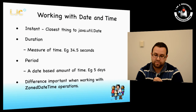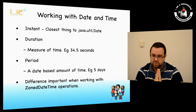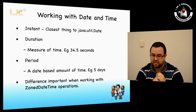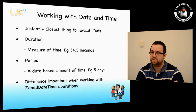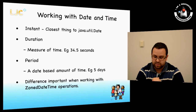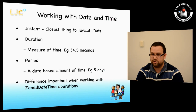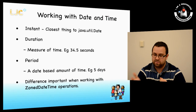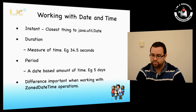A Duration is a measure of time — you could take one Instant to another and say that's 34.5 seconds; it's purely time-based. A Period is different — it's based on what we would perceive as humans. We'd say 'I'll meet you in the pub in five days' rather than 'X number of milliseconds from now.' The difference is subtle but important with ZonedDateTime operations: if you add five days expressed in seconds and cross a daylight saving boundary, you might lose an hour, whereas a Period would resolve that correctly.